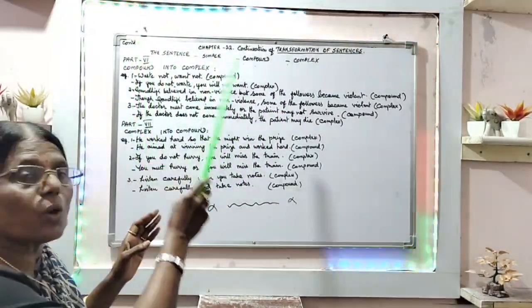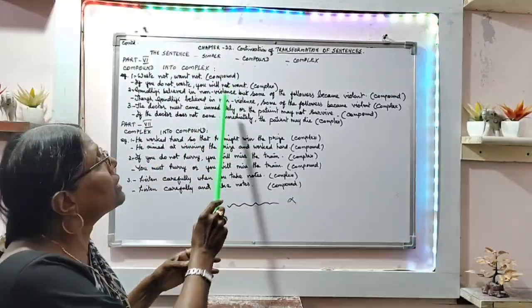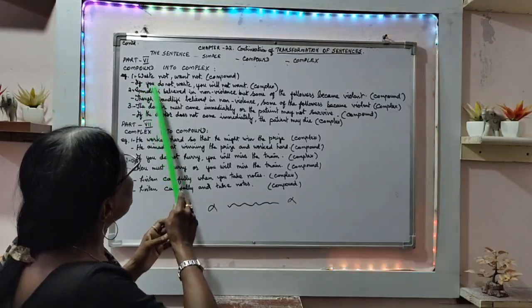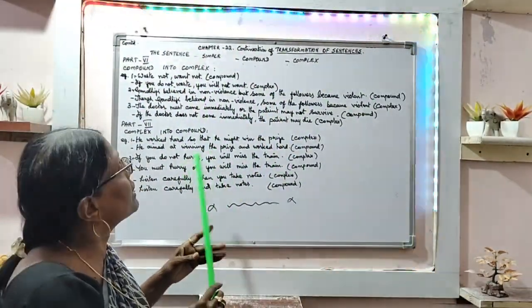Example of compound into complex sentence: waste not, want not. That is a compound sentence. If you do not waste, you will not want. It is a complex sentence.